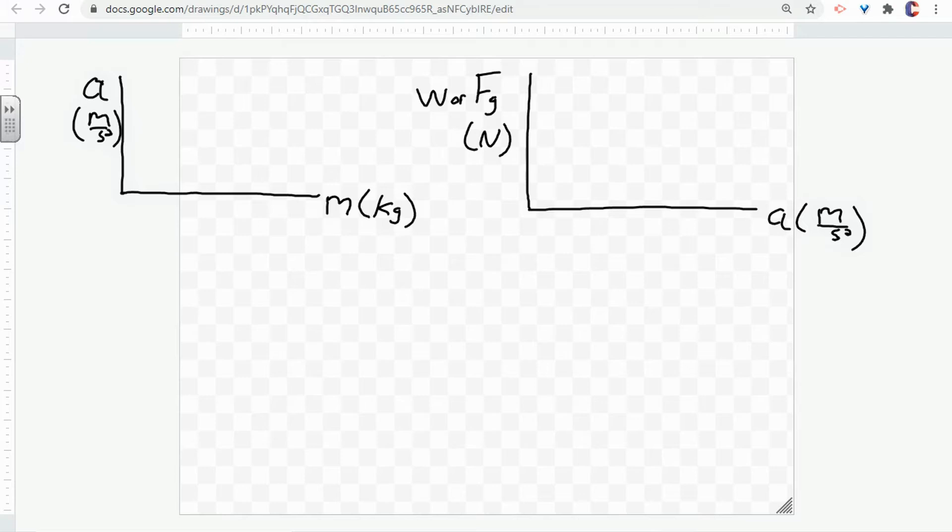and dividing that by the times squared. So when you do that, you find that acceleration and mass, the shape of the graph looks like this.